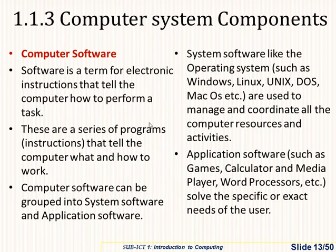The second component is computer software. Software is a term for the electronic instructions that tell the computer how to perform a task. If we compare a computer with our body, software is our mind — because it is our mind that tells us what to do. Software tells the computer what and how to work. Computer software can be grouped into two: system software and application software, which we shall look at in detail.